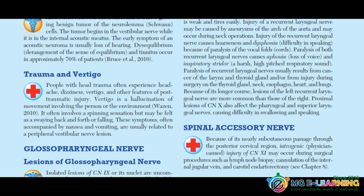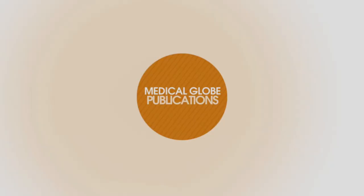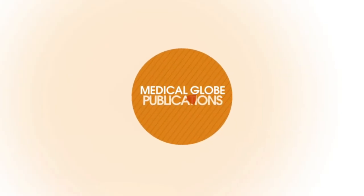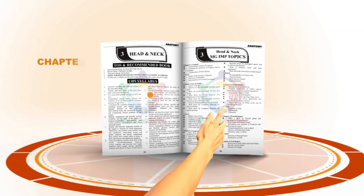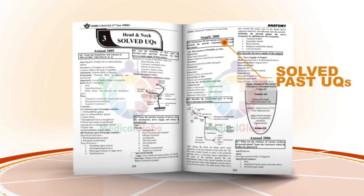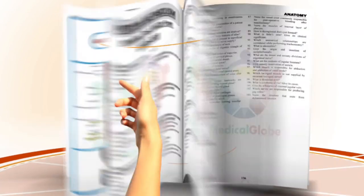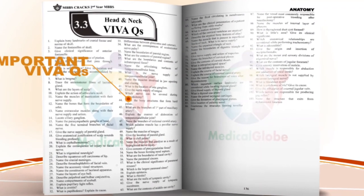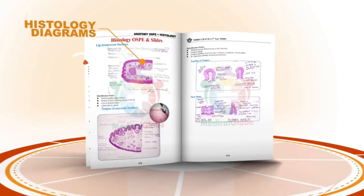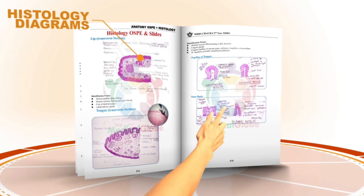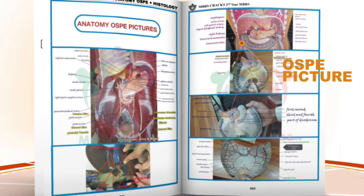For further MCQ and OSPE coverage, consult Medical Globe Crack Series. Medical Globe introduces its series of successful publications — MBBS Cracks, The Benchmark of Fall — containing all chapter-wise questions of prime importance, all annual and subtly solved university questions, questions for OSPEs and Vivas, chapter polls, and labelled histologic and anatomic models in high resolution for distinction-level OSPE preparations.